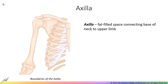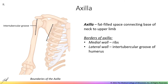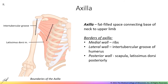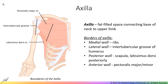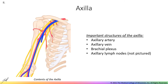Now let's move on from the breast to discuss the axilla, which is the anatomical term for the armpit. The axilla is a passageway conducting neurovasculature to the upper limb. The medial wall of the axilla is formed by the ribs, and laterally bounded by the intertubercular groove of the humerus. The posterior boundary is formed by the latissimus dorsi muscle and scapula, while the anterior wall is the pectoralis major and minor muscles. This fat-filled passageway is important for conducting neurovasculature between the thorax and upper limb, including the axillary artery and axillary vein, and the brachial plexus.